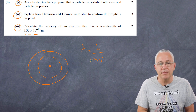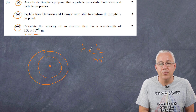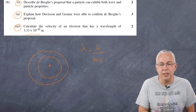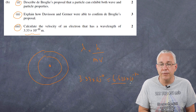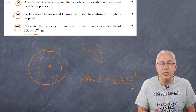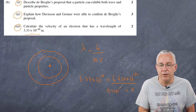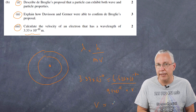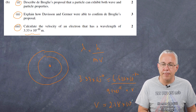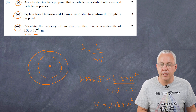For part three, we calculate the velocity of an electron with a wavelength of 3.33 × 10⁻¹⁰ m. Applying λ = h / mv: substituting Planck's constant h = 6.626 × 10⁻³⁴, the electron mass m = 9.1 × 10⁻³¹ kg, and rearranging for velocity, we get v = 2.18 × 10⁶ metres per second.